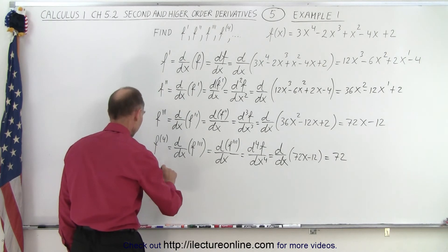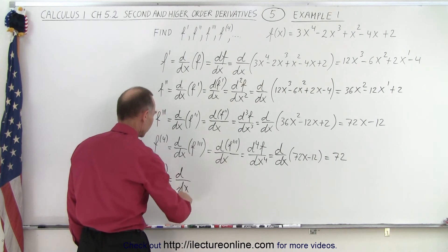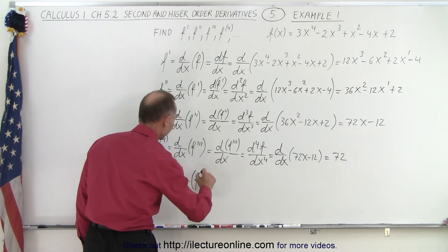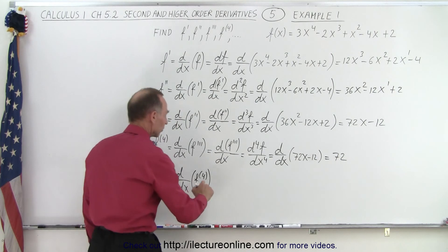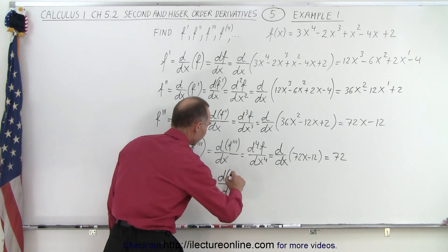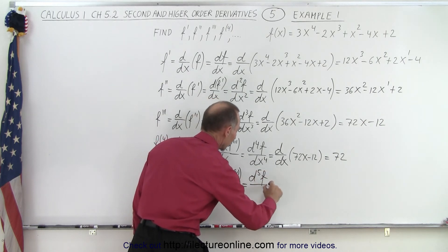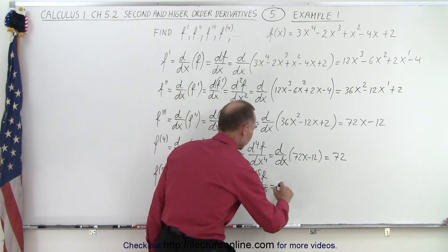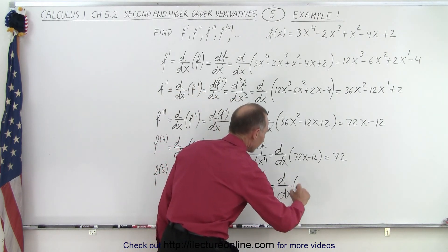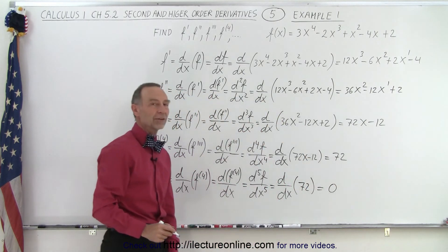Finally, we can take the fifth derivative, which is equal to d/dx of f to the fourth, or the fifth derivative of f with respect to x. This is equal to the derivative with respect to x of the fourth derivative, which is 72, and that of course is equal to zero, because that's a constant.